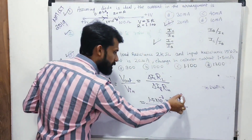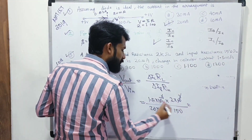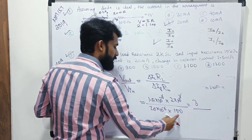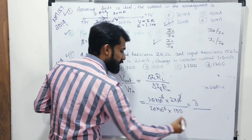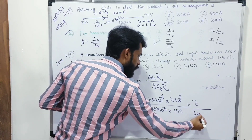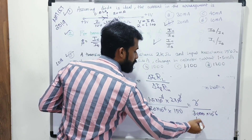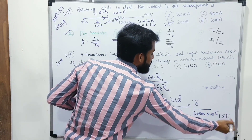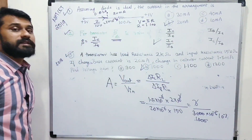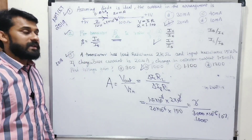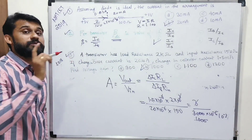Solving: numerator = 1.5 × 2 = 3 (10⁻³ and 10³ cancel). Denominator = 20 × 150 × 10⁻⁶ = 3000 × 10⁻⁶ = 3 × 10⁻³. So gain = 3 / (3 × 10⁻³) = 1000. The voltage gain is 1000. This was a numerical question from the 2018 MHT CET exam.